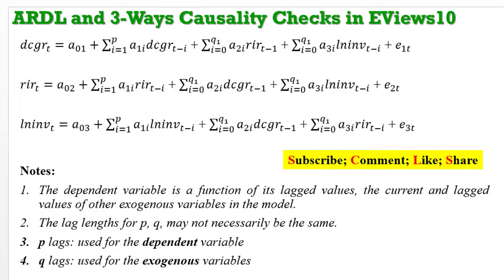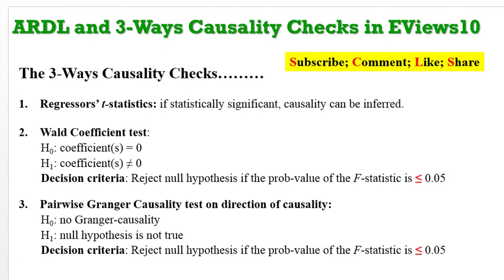This is the model we are working with, and I'm taking each variable in the model as a dependent variable. This may not be your own approach, but I'm just trying to broaden your understanding so that you can use the variables in your model as a dependent variable, trying to create a vector relationship. In the previous video, I did checks using the regressor statistics and the Wald coefficient test. So in this video, I'll just conclude by conducting the pairwise Granger causality test and also run some diagnostics.